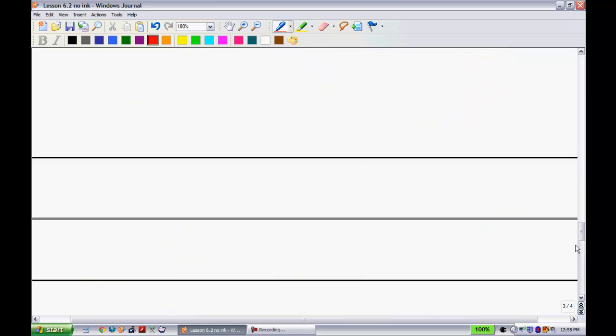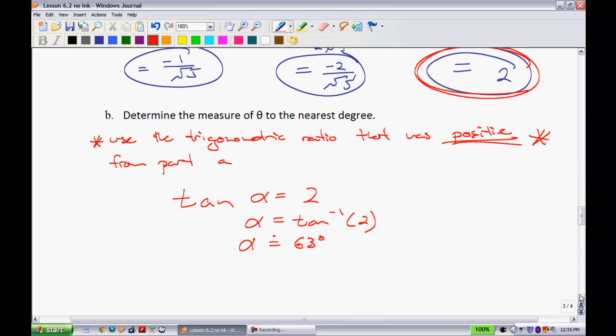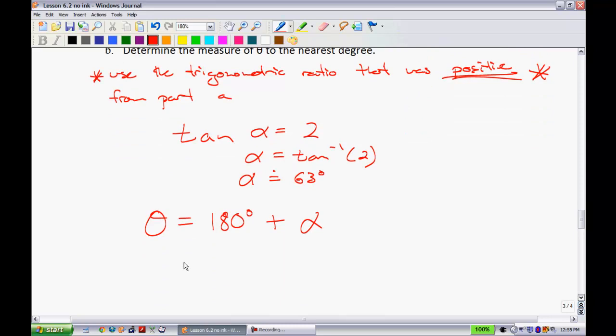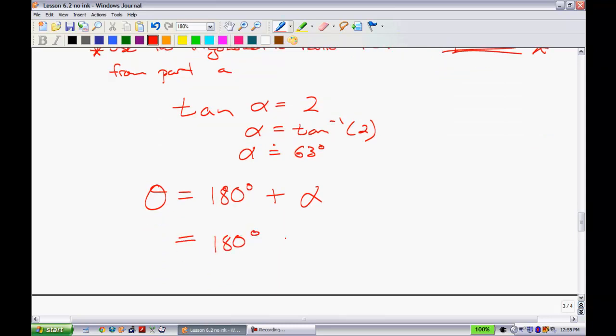So theta is just going to be equal to 180 degrees plus what my reference angle was. So theta will be equal to 180 degrees plus alpha. And we know that alpha is 63 degrees. So we found out that theta is approximately 243 degrees. And why I say approximately is because we did a round. Let's go to the next page.